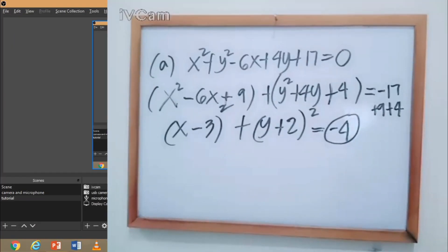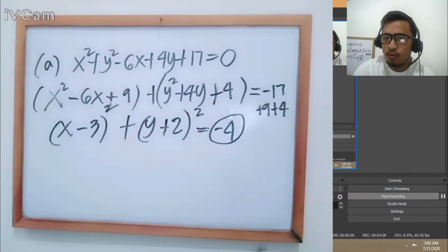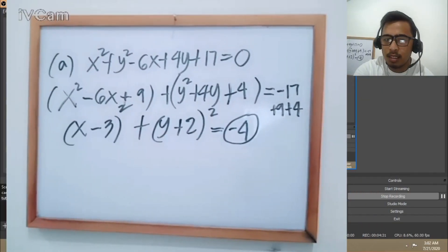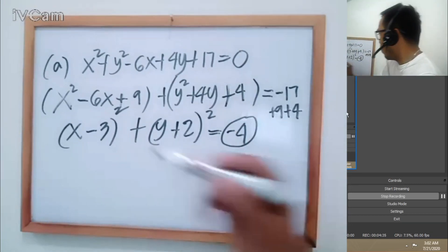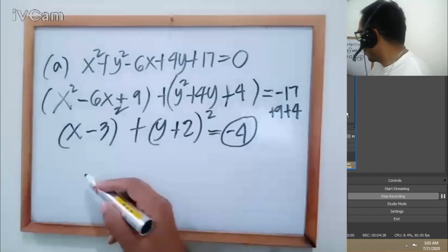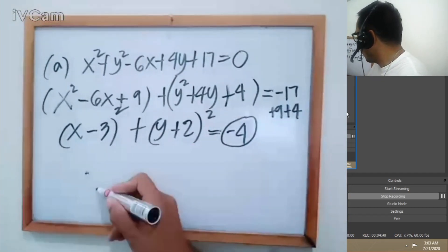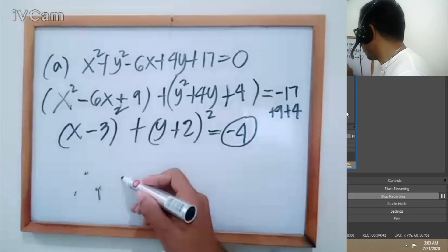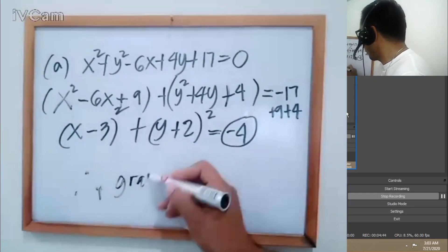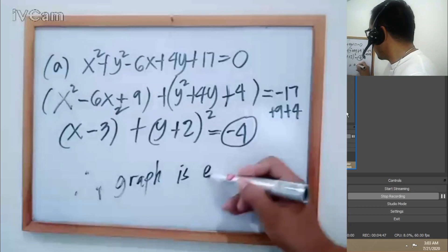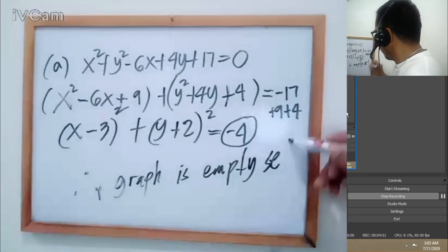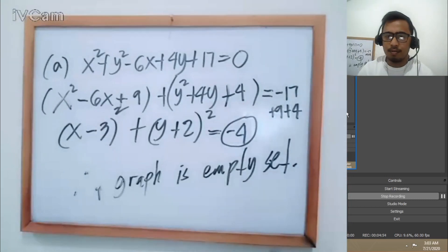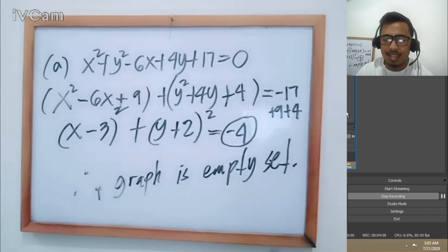There is no point (X, Y) that can satisfy this equation. We cannot find values of X and Y that make it true. Therefore, the graph is the empty set.